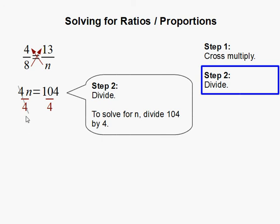So 4 divided by 4 is 1 and 1 times n is just n and 104 divided by 4 is 26. n equals 26 is our answer and that completes our problem.